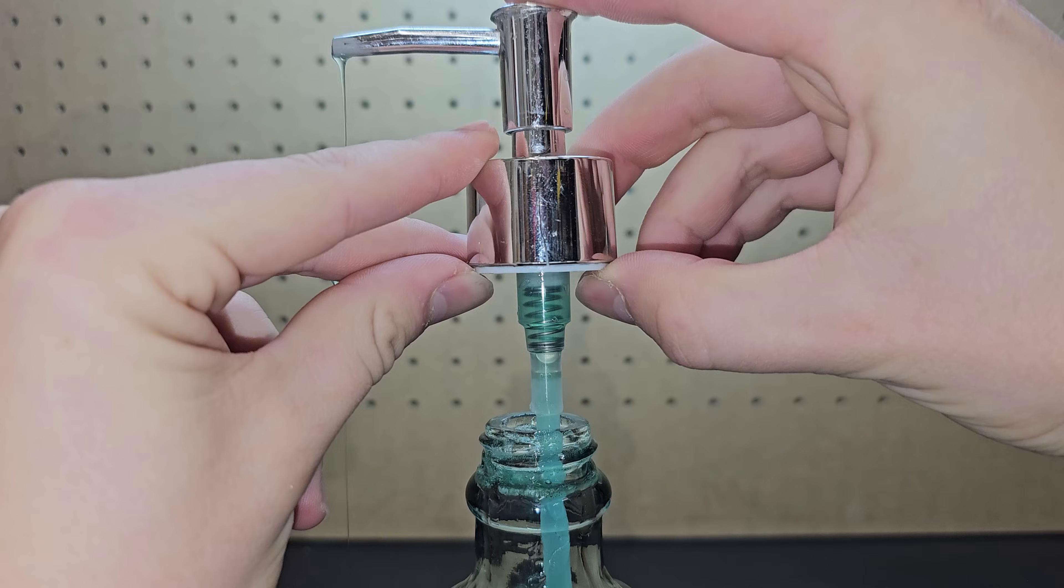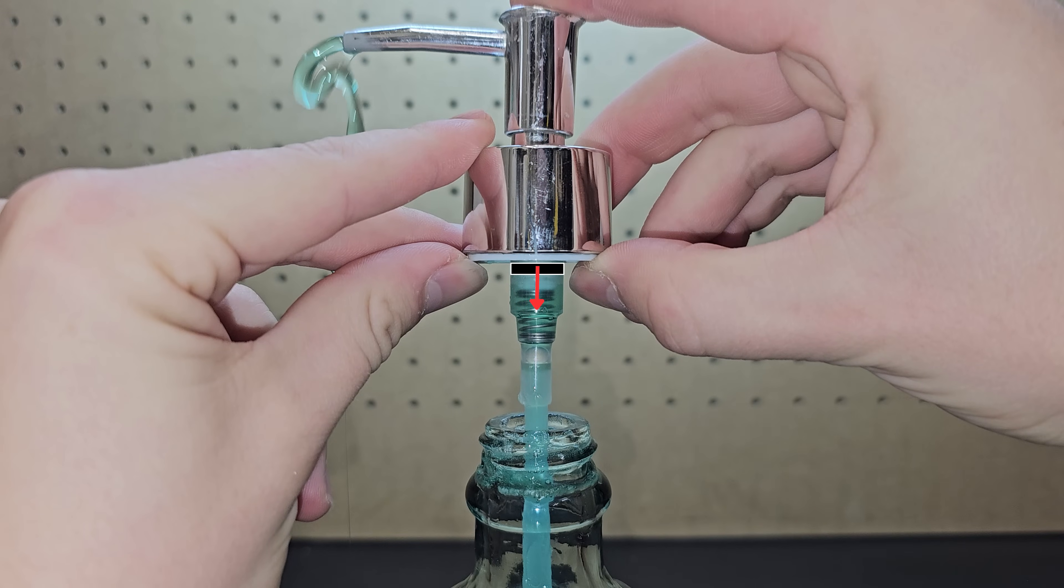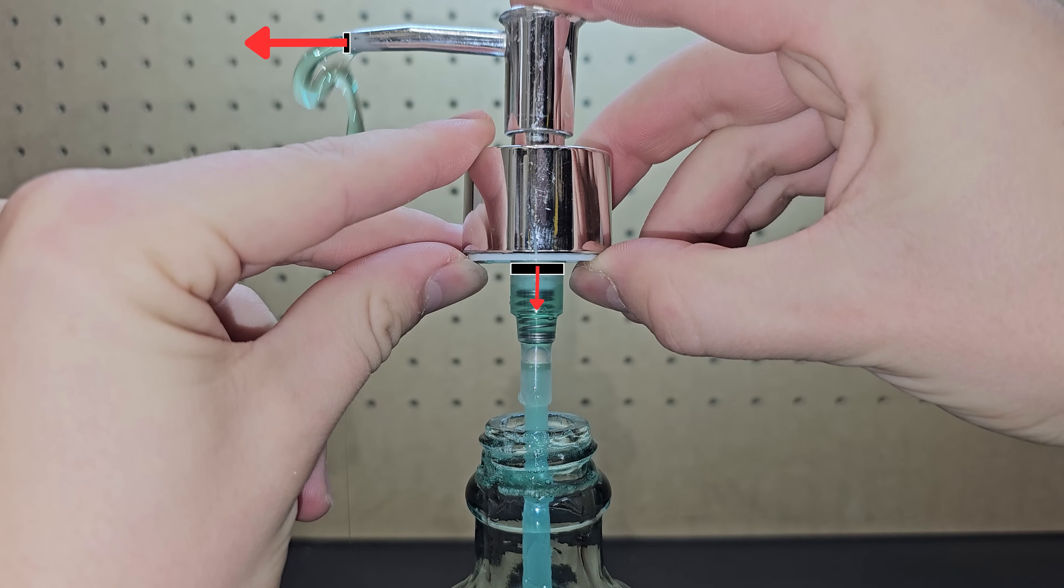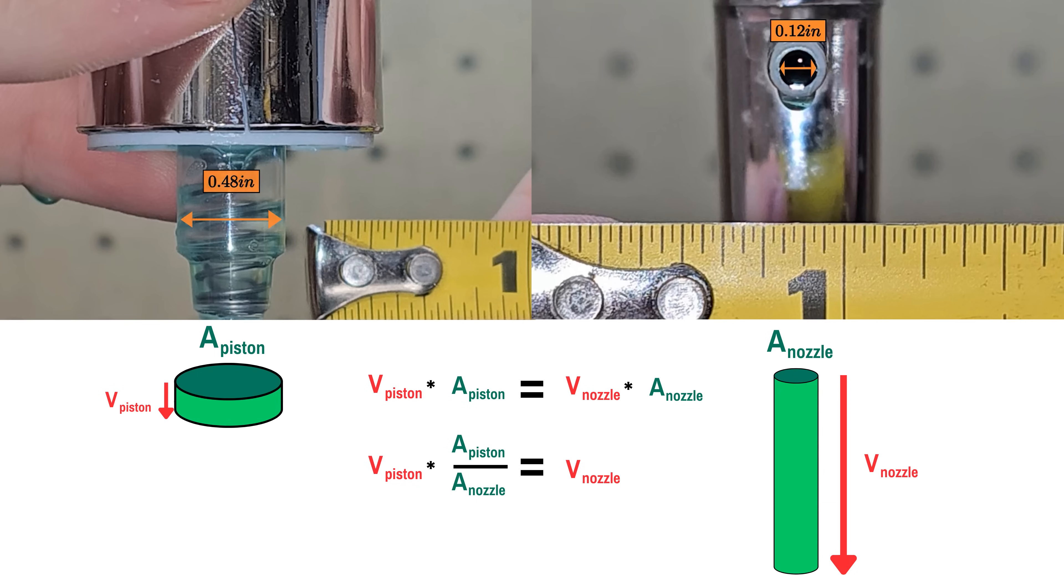Anyway, assuming the soap is incompressible, whatever volume of soap is pushed down by the piston will leave the nozzle in the same period of time. Since the piston's diameter is four times larger than the nozzle diameter, the cross sectional area is 16 times greater, meaning the exit velocity of the soap out of the dispenser should be 16 times greater than that of the piston.